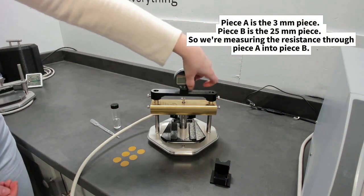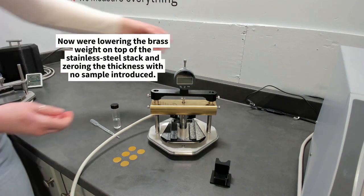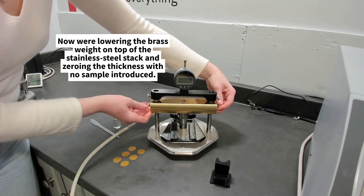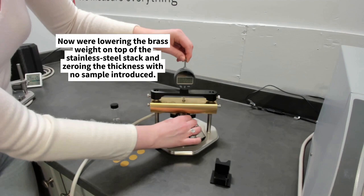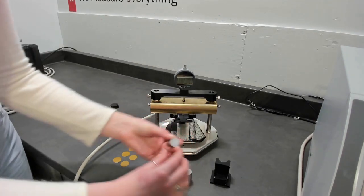Here we're applying our standard weight and zeroing the thickness because there's no sample introduced just yet. We run this as our first step to zero the thickness and disassemble it.